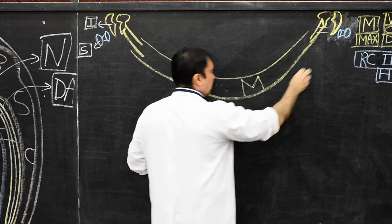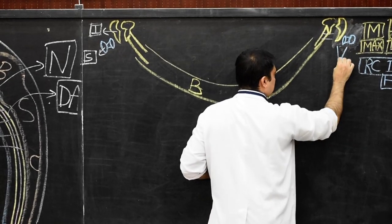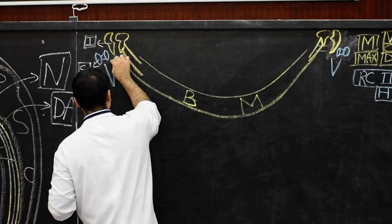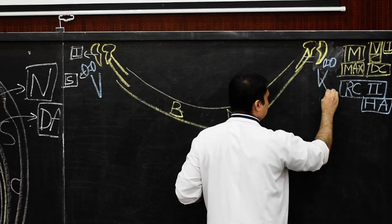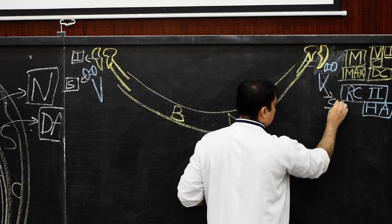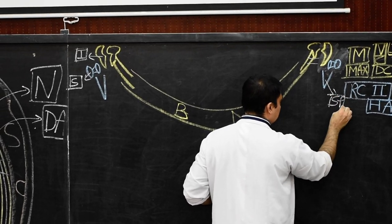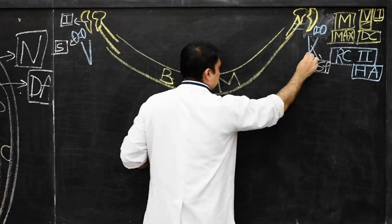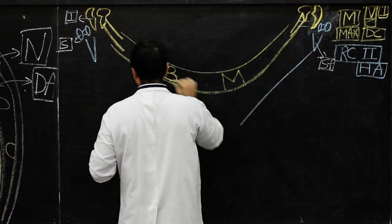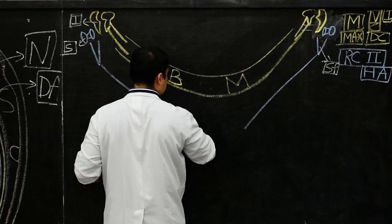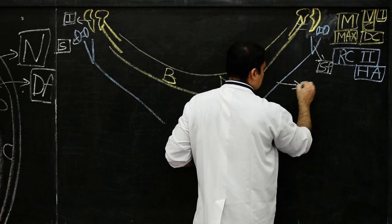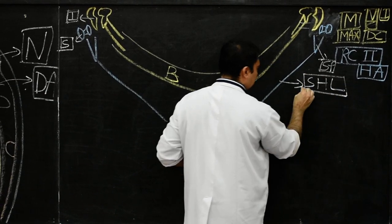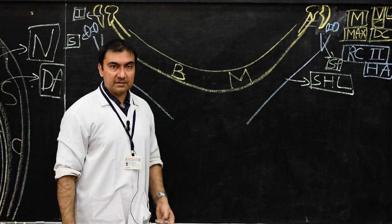One more structure will develop from the dorsal end of the second pharyngeal arch: the styloid process. A third component will also arise: the stylohyoid ligament. So the dorsal component of the second pharyngeal arch gives: stapes, styloid process, and stylohyoid ligament.